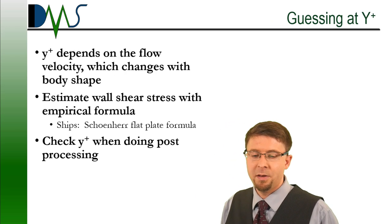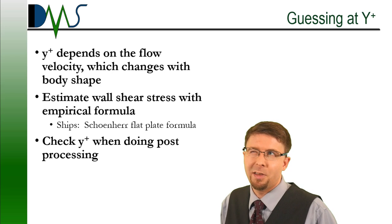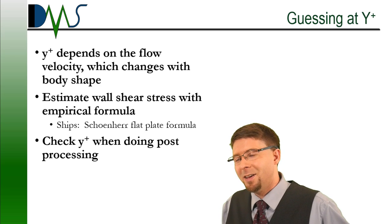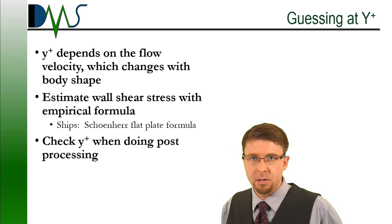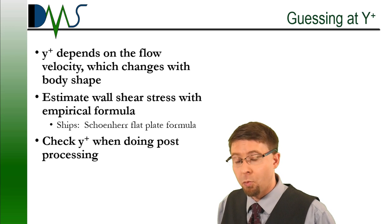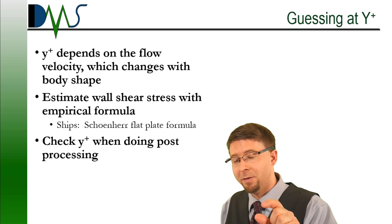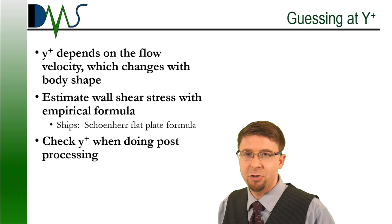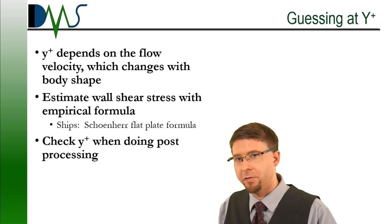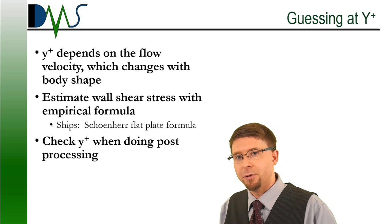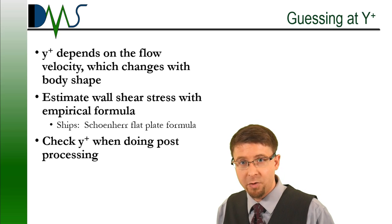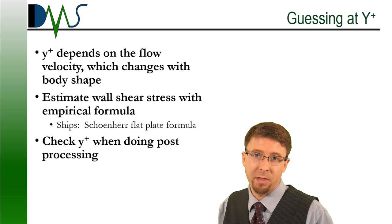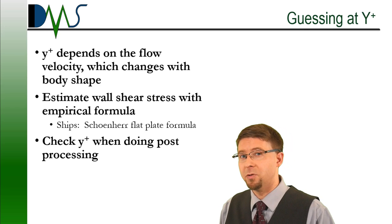Well, all of that sounds great, but how do you actually get that first cell height to get the Y-plus that you want? You kind of have to take a guess, honestly. It depends on the flow velocity right at that point in the shape, which changes with your body shape. You're going to be able to estimate the wall shear stress with some sort of empirical formula. For a ship, I tend to use the Schoener flat plate formula. But in the end, it's a bit of a guess and check method. So you're always going to check your Y-plus when you're doing your post-processing.